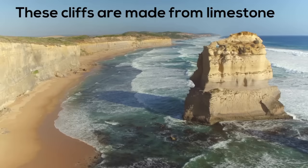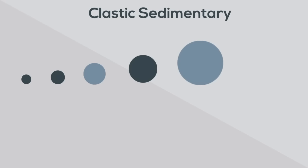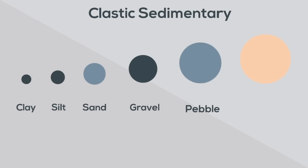Clastic sedimentary rocks are subdivided according to the dominant particle size. These particle sizes are ranked from smallest to largest: clay is the smallest, then silt, sand, gravel, pebble, and boulder.